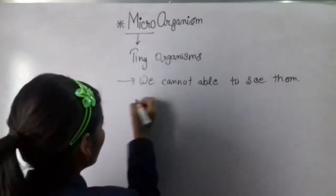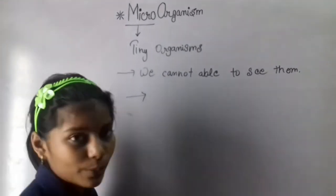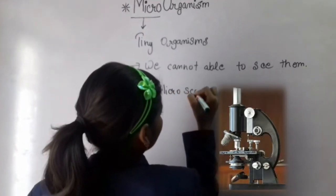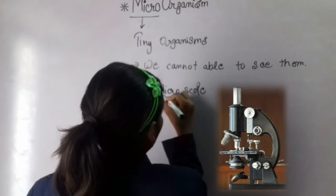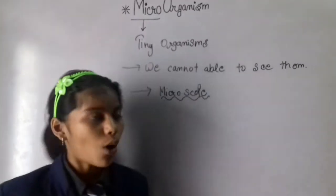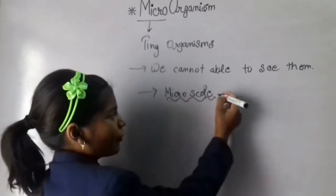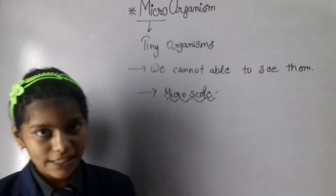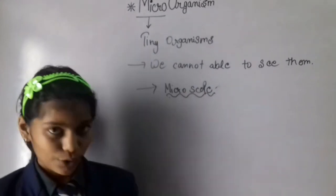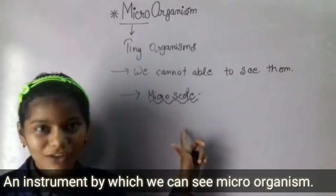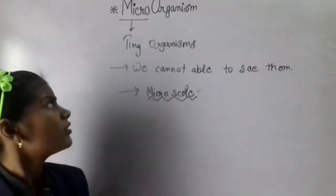We can use a special instrument: the microscope. We use microscope to see them. So the definition of microscope is: an instrument which is used to see microorganisms is a microscope.